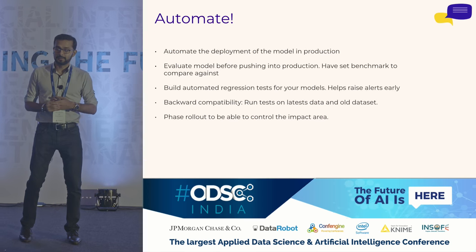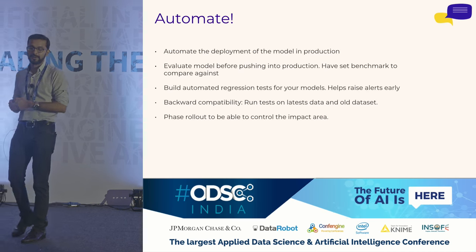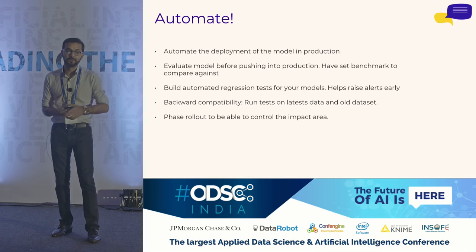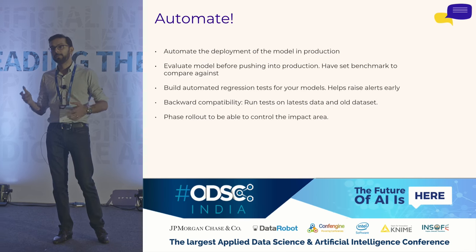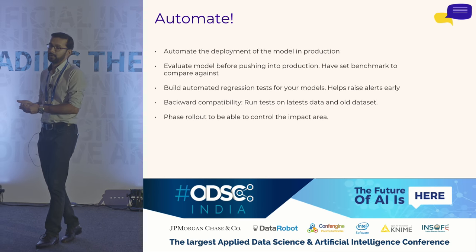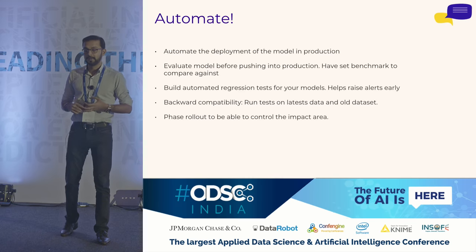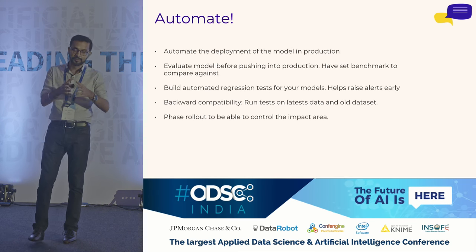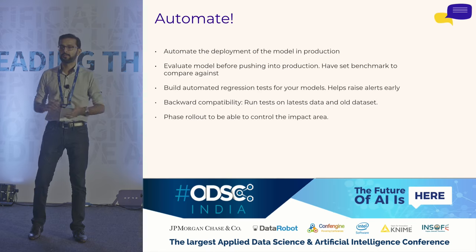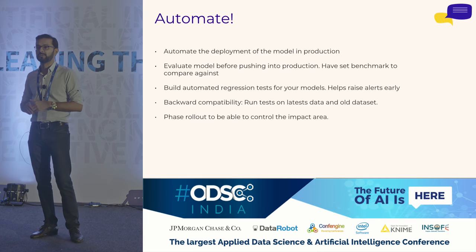Lastly: automate. All of the things we spoke about — just automate them, because you cannot scale manually. Your deployments — you can't go and manually restart all your servers. You cannot manually test accuracy and precision. We've been bitten where we didn't automate. We now automate everything: our regression tests on bots are automated, deployments are automated. We also have phased rollouts — you can deploy on certain users, certain bots, a few models, get data on how it's working, and then spread it out. It's very important to keep all of these things in mind so you don't face those problems later.